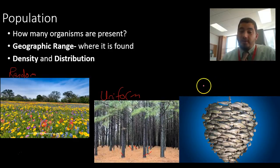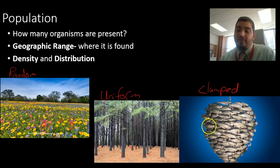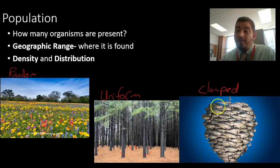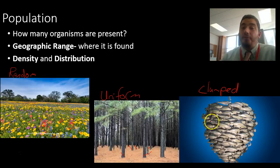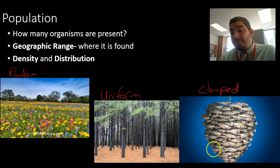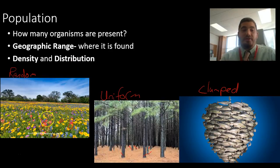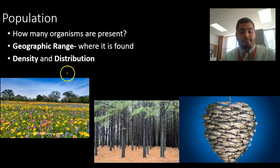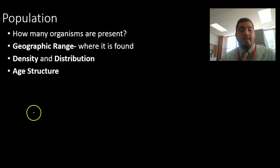The third type is called clumped. One of my favorite examples of a clumped distribution is a bait ball, or a ball of fish. You've seen this before in underwater videos — fish travel in a big school like this, clumped together, to have safety in numbers. So population can have density and it can have distribution.